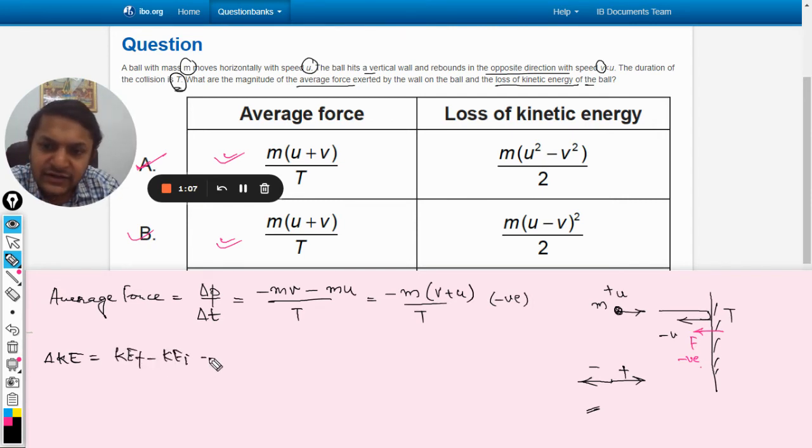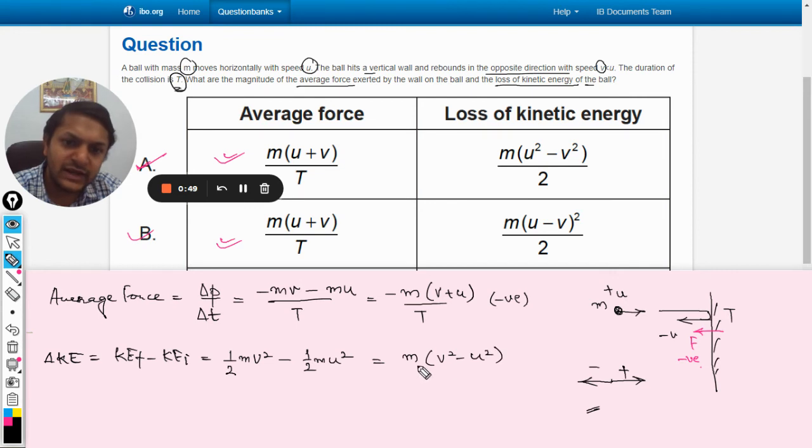So change in kinetic energy is final kinetic energy minus initial kinetic energy. Simple. So half m v squared will be final minus half m u squared. So we have m(v squared minus u squared) divided by 2.